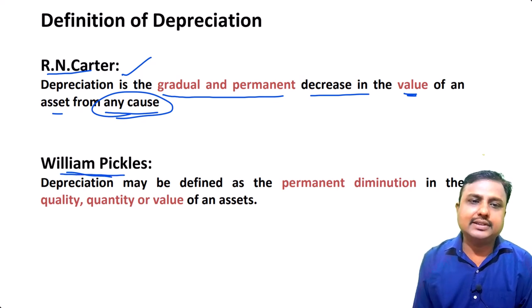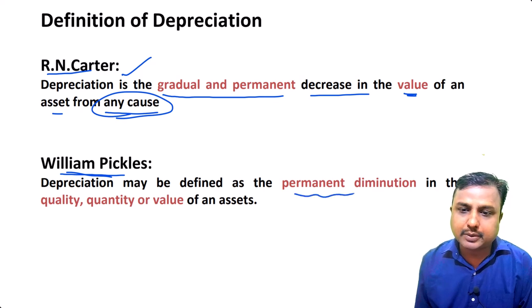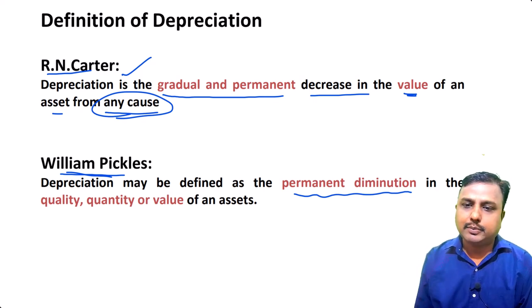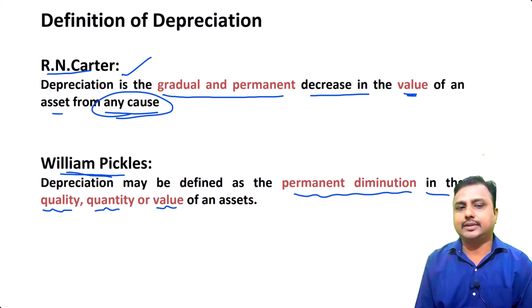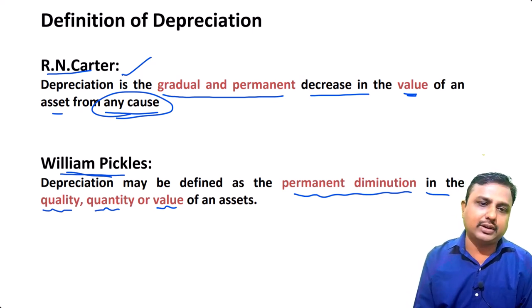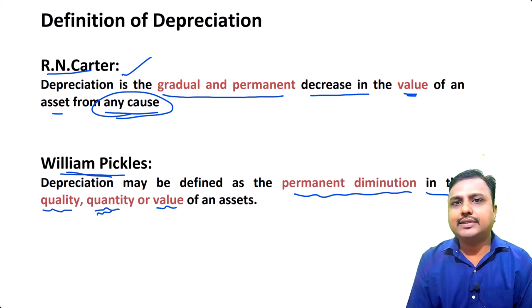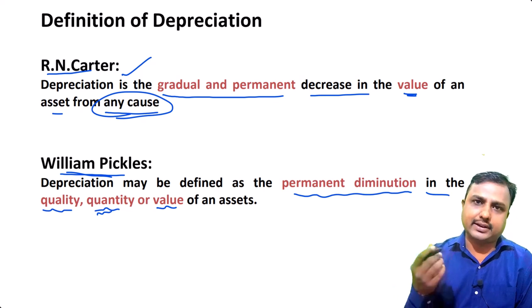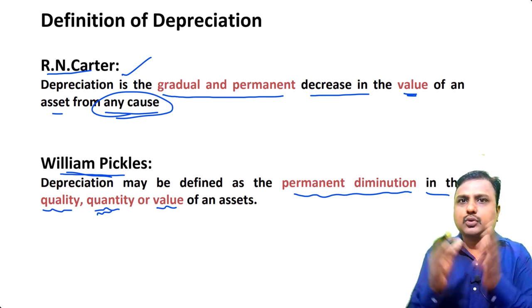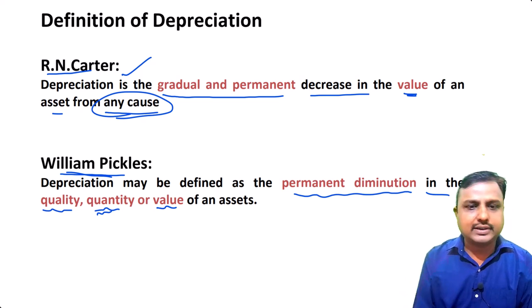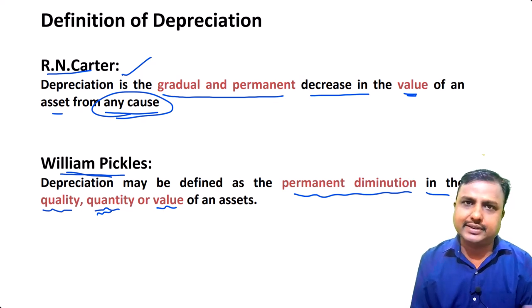What is depreciation according to the second definition? Depreciation is defined as permanent diminution in the quality, quantity, and value of an asset. Quantity means in number — for example, if we have a contract to extract coal from the land, the quantity decreases. If something is reduced in value, quantity, and quality, what do we call it? Depreciation.